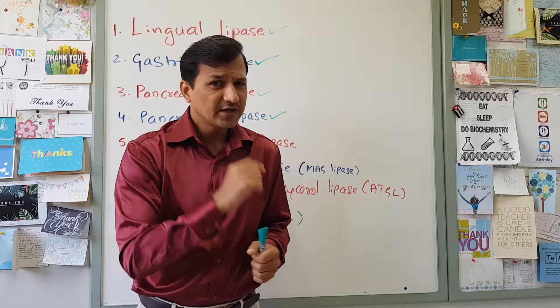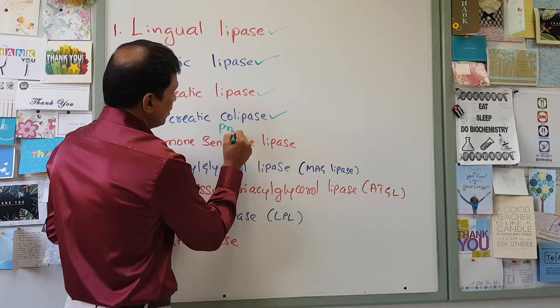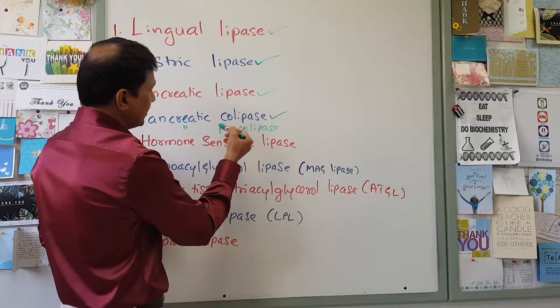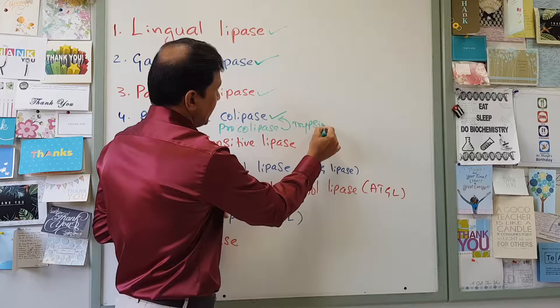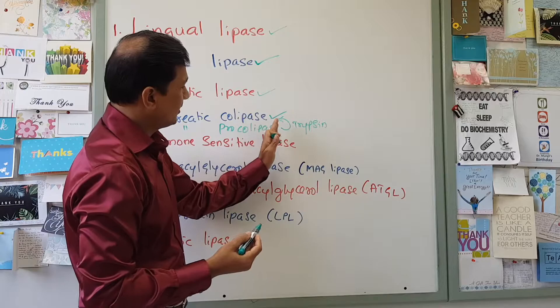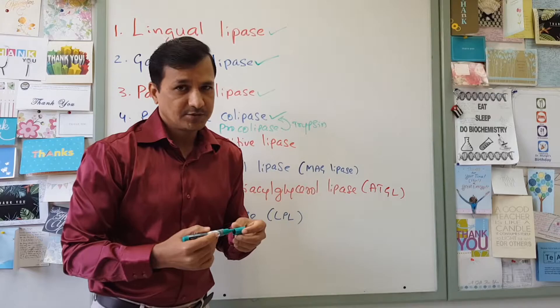In fact, we have one more colipase — pancreatic pro-colipase. Pancreatic colipase is released as pancreatic pro-colipase, which is then activated into pancreatic colipase by the enzyme trypsin.